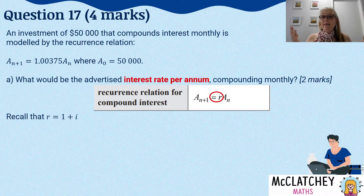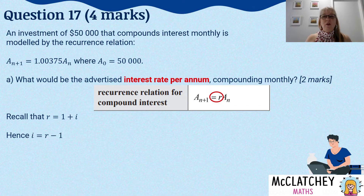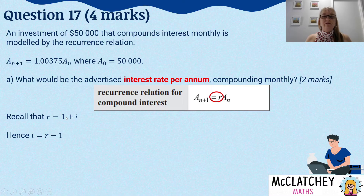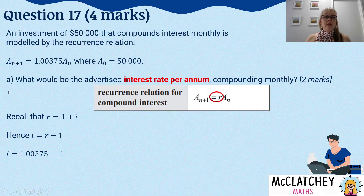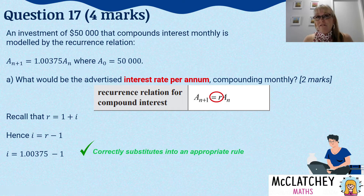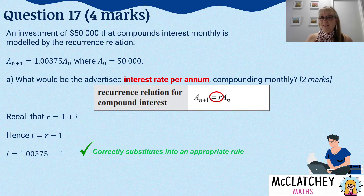Firstly, we need to remember that R is actually made up of 1 plus the interest rate per compounding period, not per annum. If we rearrange this formula and subtract one from both sides, we find that the interest rate equals R minus 1. So we do that with our information: 1.00375 − 1 gives us the interest rate equal to 0.00375. That gives us a first mark for substituting that information into the right rule.